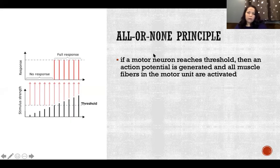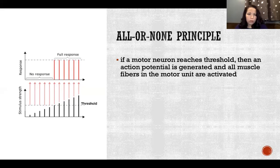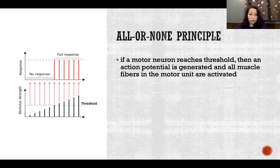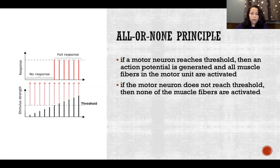The all-or-none principle says that if a motor neuron reaches threshold, an action potential is generated and all muscle fibers in the motor unit are activated. There's no such thing as a partial action potential or only activating some of the fibers within a unit — it's all or none. Either the motor neuron reaches threshold and activates all of its fibers, or it doesn't reach threshold and there is no action potential and none of the fibers are activated.